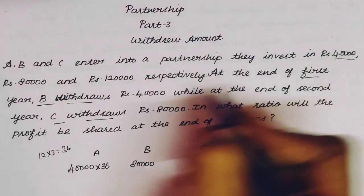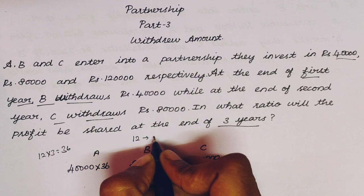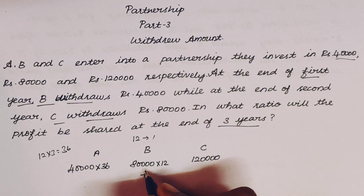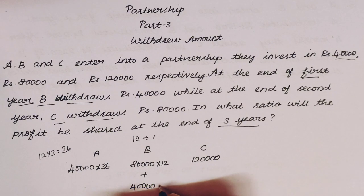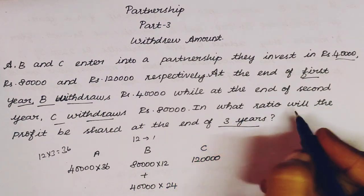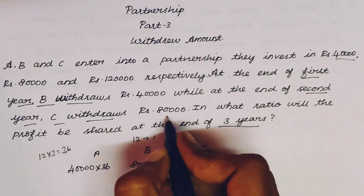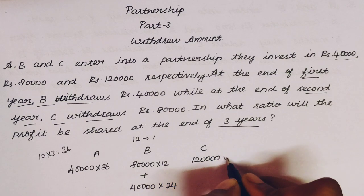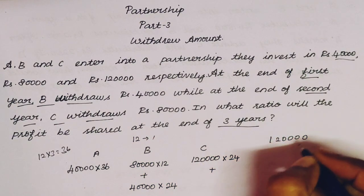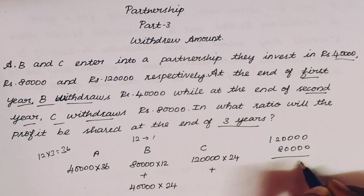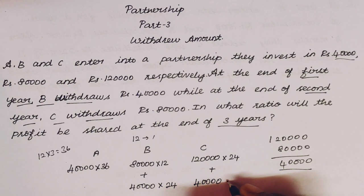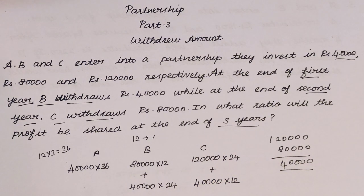After B withdraws Rs. 40,000 at the end of 12 months, the remaining balance for B is Rs. 40,000 for the remaining 24 months. That is clear. Now we find the ratio for A, B and C.